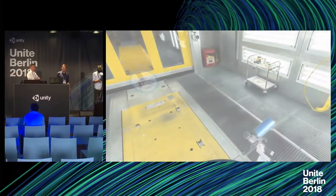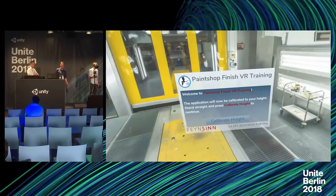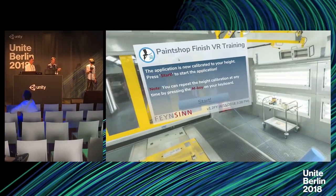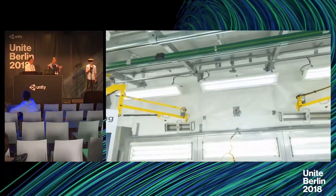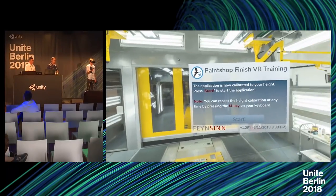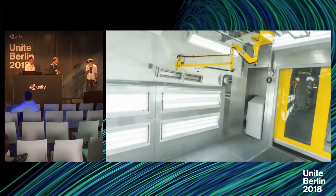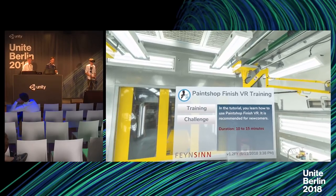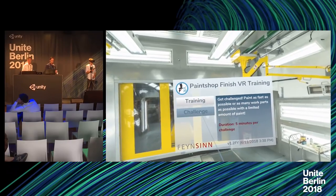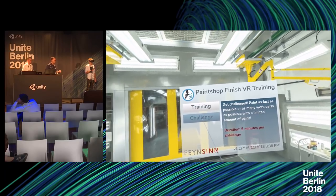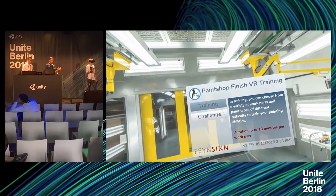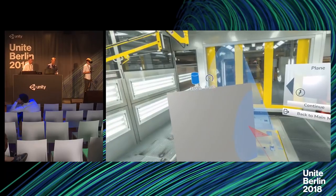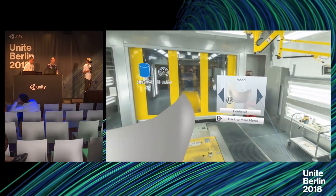Let's start the demo by simply calibrating the height — just press the button. Imagine he's holding a real spray gun. What you can already see is the compartment of the room where painting is usually done — we went to the customer and made a 360-degree panorama and integrated it into Unity. You can see the two modes: there's a basic training mode which is like a pro painting session, and a challenge mode which is a gamification aspect where you have to paint as many parts as possible with a certain amount of paint. We're going to do basic training. Now you choose the work part — we're choosing this hood.